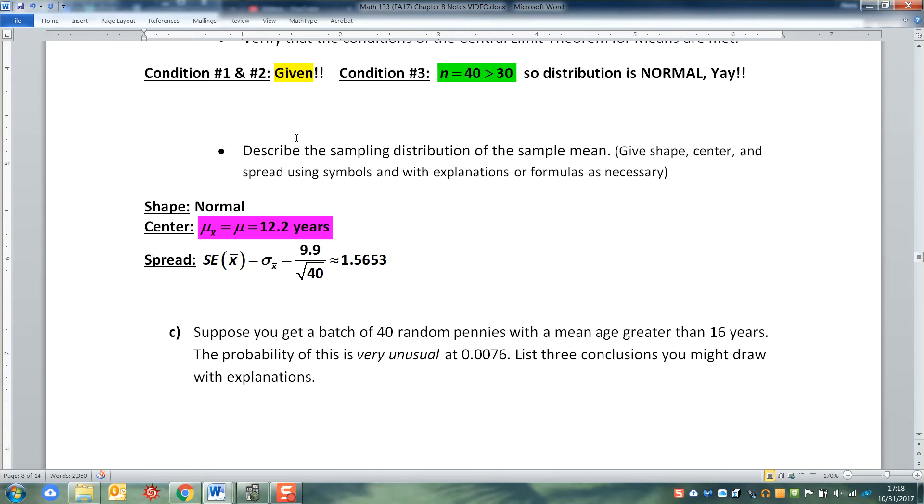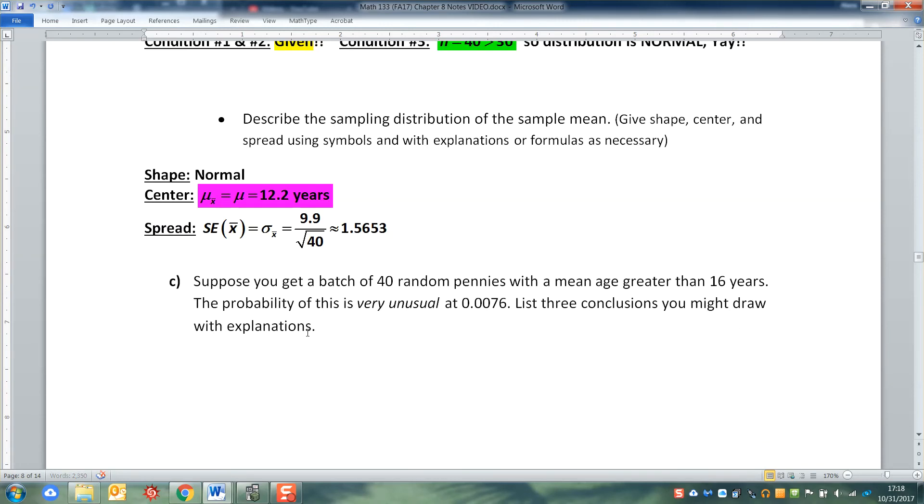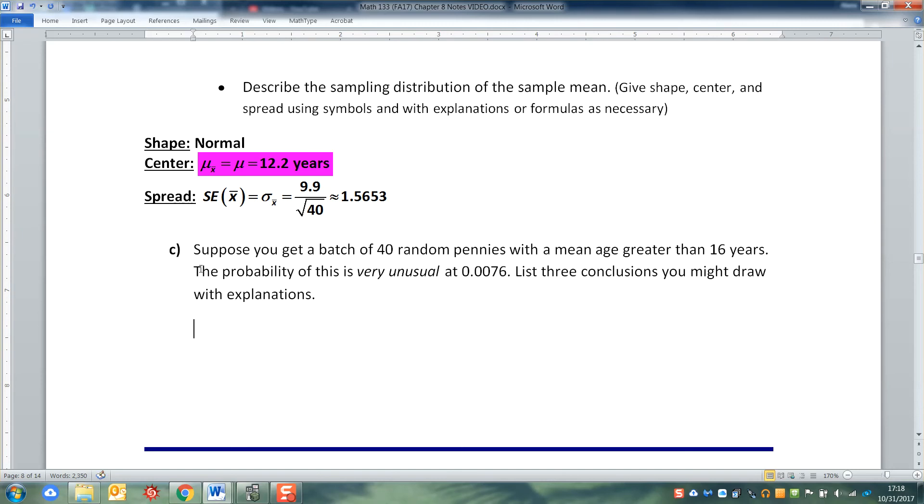So now that we know how to describe the shape of the distribution, we have to answer another big question. And this is going to kind of lead us into what we're going to be doing for chapters 9 and 10. So this is a really important point right here for part C. Suppose that you get a batch of 40 random pennies. Keep in mind that's the same distribution that we just talked about right here, so we know how that should be distributed, normal with a center and a spread. And you get that the mean age is greater than 16, and that has a probability that is very unusual of 0.0076. So what are some possible reasons that could happen?